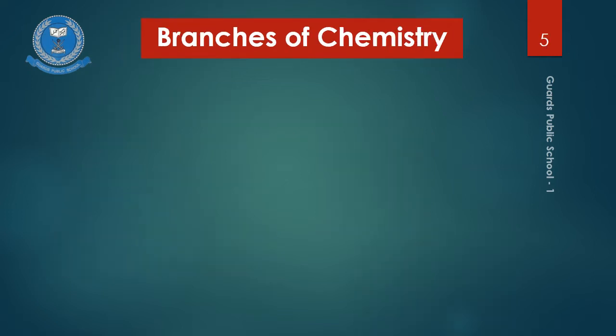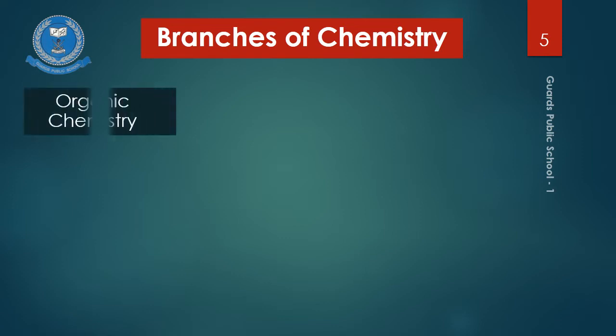There are so many branches of chemistry, but we have selected nine branches which are very important for us. I'll give a brief description here and then explain each one by one. The first branch is organic chemistry.